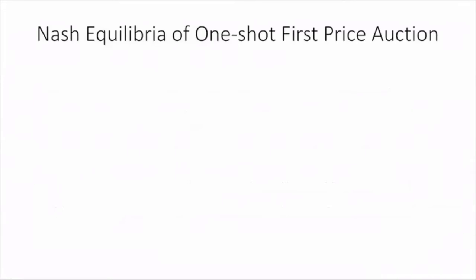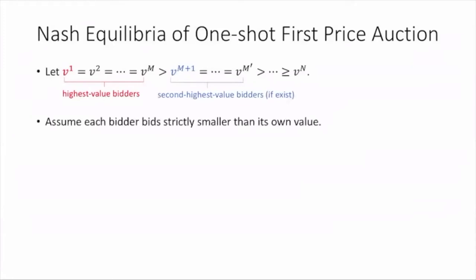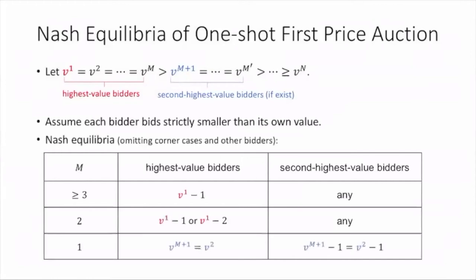Going back to the deterministic setting, our work extends to the case of arbitrary number of asymmetric bidders in the first price auction. With the fixed value assumption, we can clarify the Nash equilibrium of the one-shot first price auction. We order the bidders by their values decreasingly. M bidders have the same highest value V1 to Vm. We call them the highest value bidders, followed by the second highest value bidders if they exist.